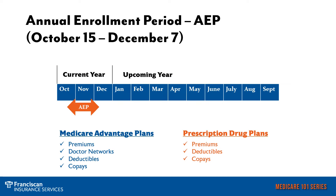The annual enrollment period takes place each and every year from October 15th to December 7th. No matter which type of Medicare plan you are in, you want to make sure you check your plan during the annual enrollment period. During this time, if you have a Medicare Advantage plan, you will want to check and see if there are any changes in premiums, co-pays, deductibles, make sure all your doctors are in network, and that there are no major changes in how your medicines are tiered. And then if you have a Medicare Supplement with a prescription drug plan, you would still want to check your premiums, co-pays, deductibles, and the tiers of your medicines.